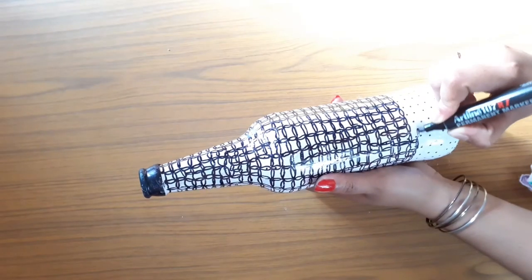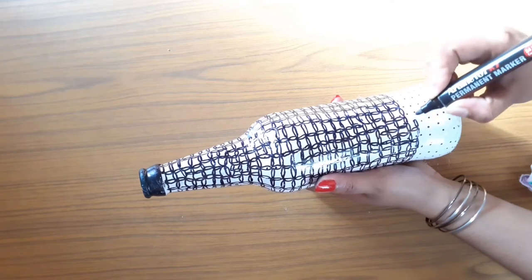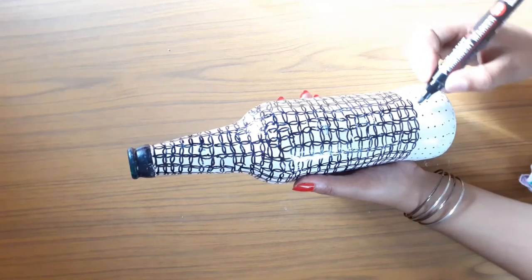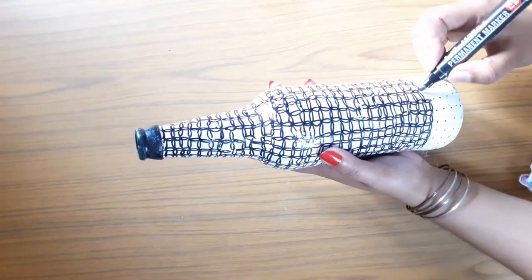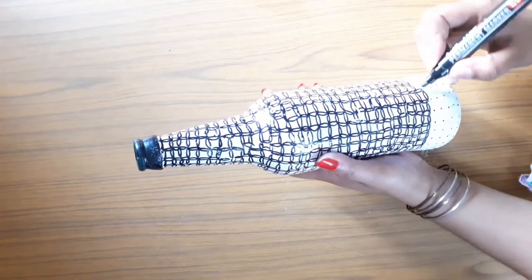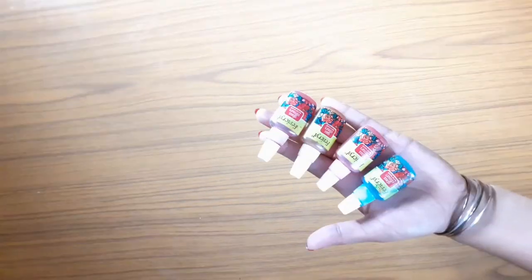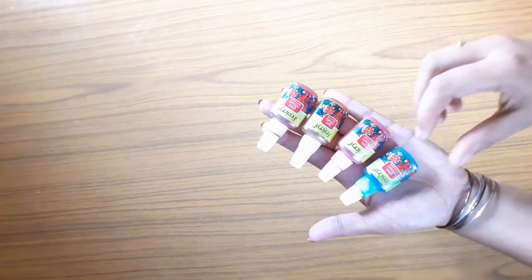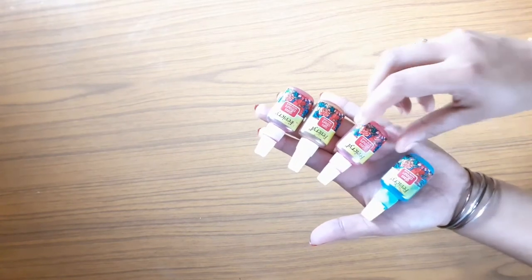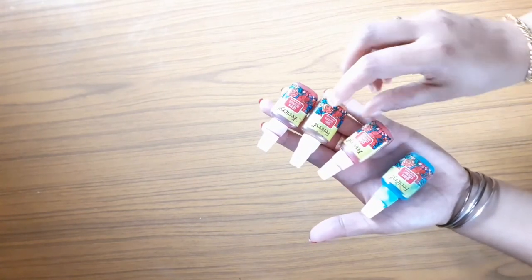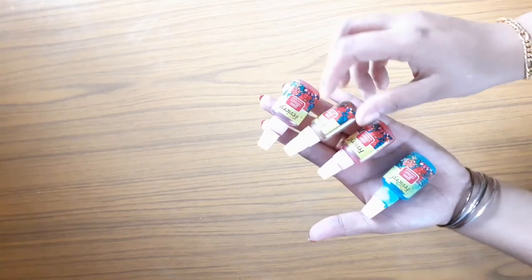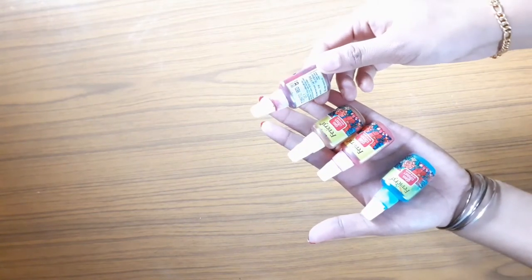Let this bottle dry for 3 hours. The glass paints I'll be using are sky blue, rose, yellow, and red. Now we will apply these colors.